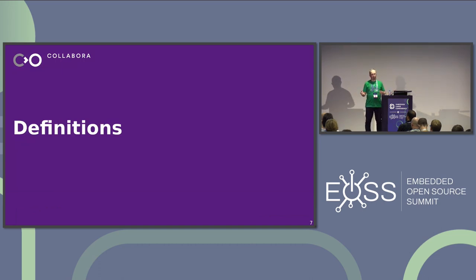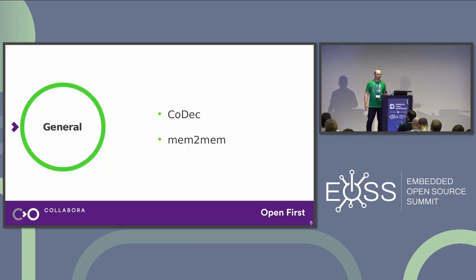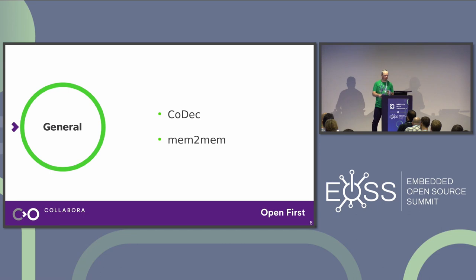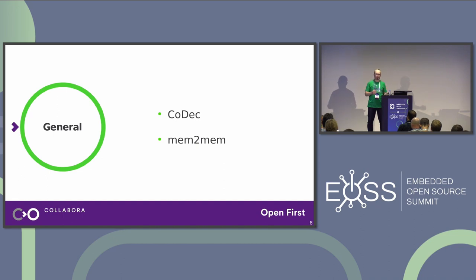Let's talk about the difference between stateful and stateless codecs, but first let's make clear what codecs are. A codec is either a program or hardware device used to encode or decode a data stream or signal. This talk is about hardware codecs found in systems on a chip. Modern codecs usually only specify what constitutes a valid bitstream and how to decode it, saying little about encoding.